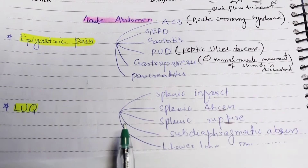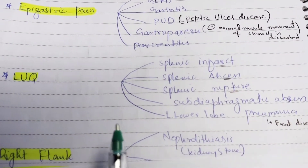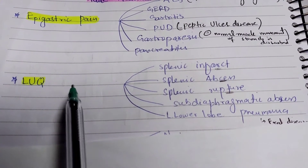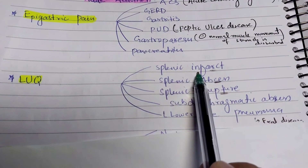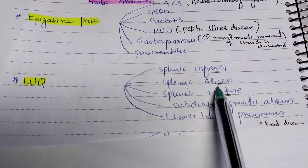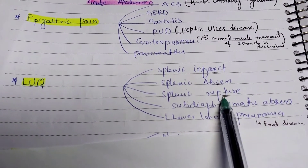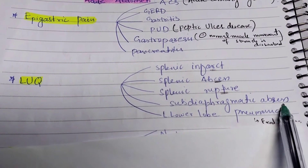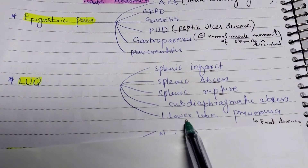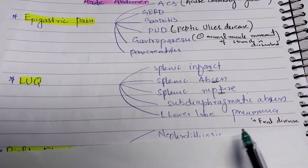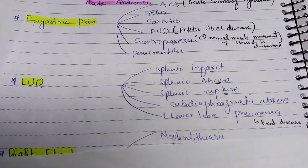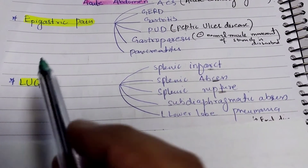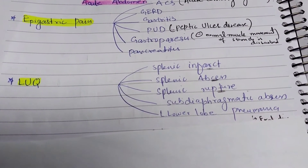Further epigastric differentials include gastroparesis, in which the normal muscle movement of the stomach is disturbed, and pancreatitis, which is inflammation of the pancreas. If a person has left upper quadrant pain, the differentials include splenic infarct, splenic abscess, splenic rupture, sub-diaphragmatic abscess, and left lower lobe pneumonia.